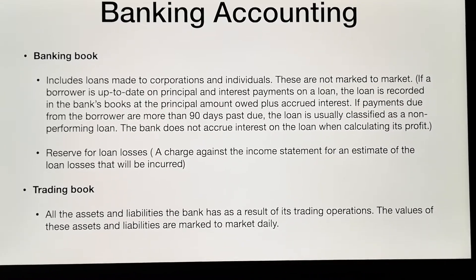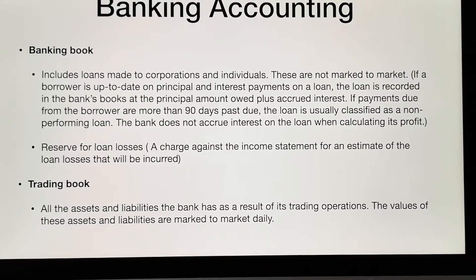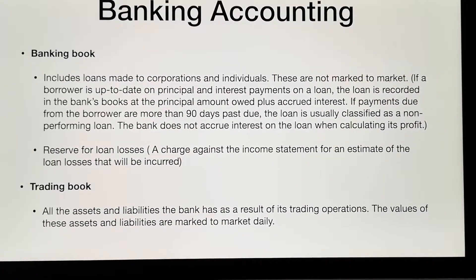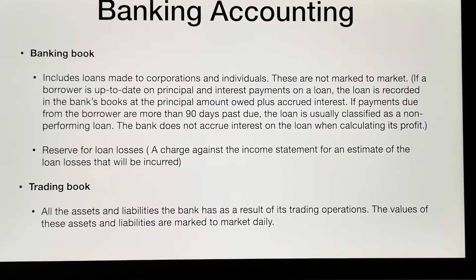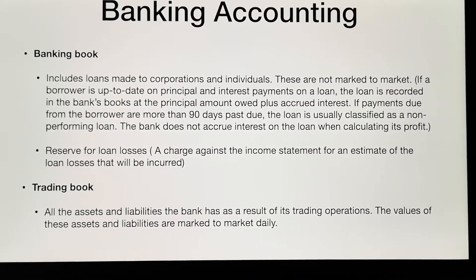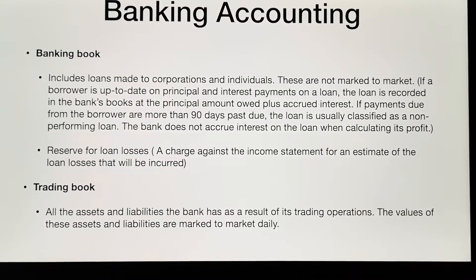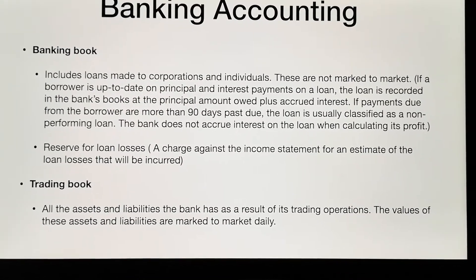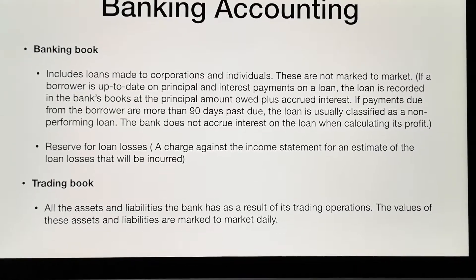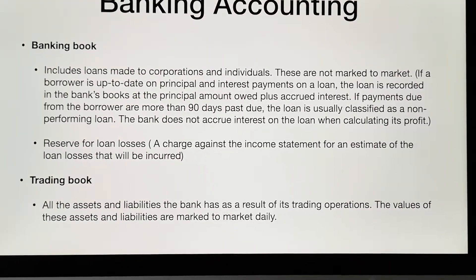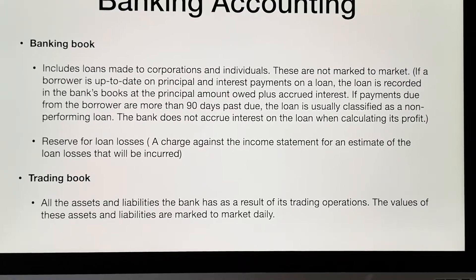For the banking book, it includes loans made to corporations and individuals. Those are not marked to market. So if a borrower is up to date on principal and interest payments on a loan, the loan is recorded in the bank's books at the principal amount owed plus the accrued interest.